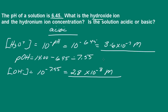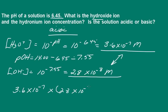So I have both concentrations. I want to check my answer and make sure I'm correct. The product of the hydronium ion concentration and hydroxide ion concentration should equal 1.0 times 10 to the negative 14. Let's give that a quick check: multiplying 3.6 times 10 to the negative 7 by 2.8 times 10 to the negative 8, and sure enough, we get 1 times 10 to the negative 14. So our answer is correct.